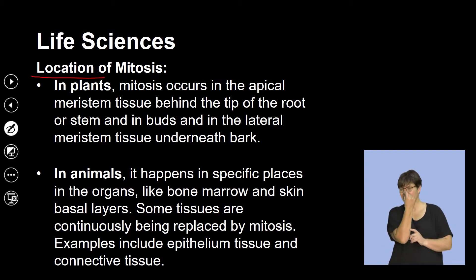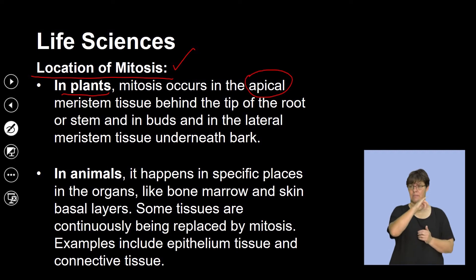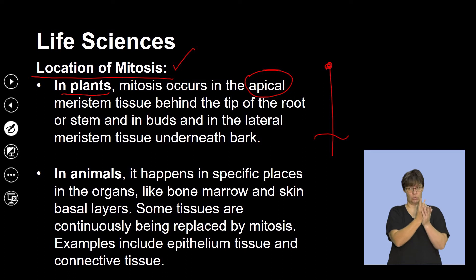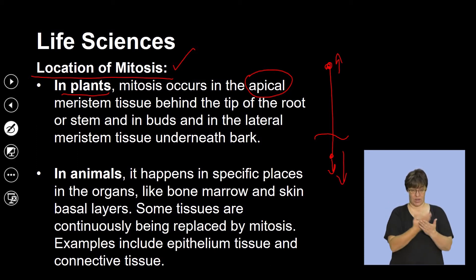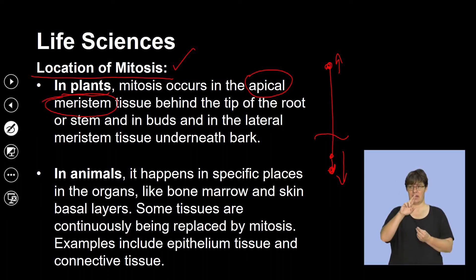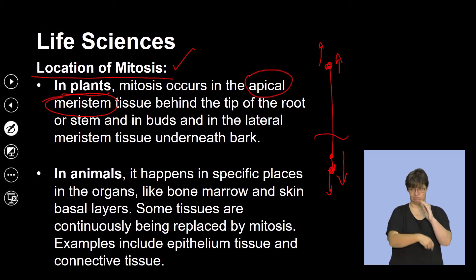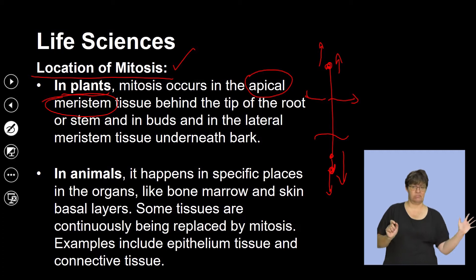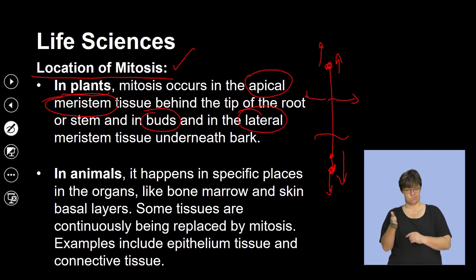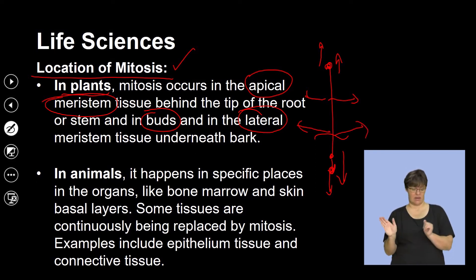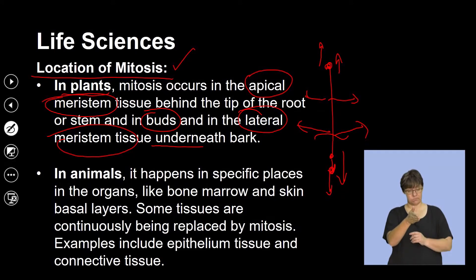Let's understand where mitosis takes place. In plants, mitosis takes place in the apical parts — the tips of the plant as well as the root tip — so a plant can grow vertically upward and vertically into the ground. At these apical tips there is meristematic tissue, which divides and constantly allows the plant to grow vertically as well as horizontally. The lateral meristem, underneath the bark, allows the plant to grow in girth or width.